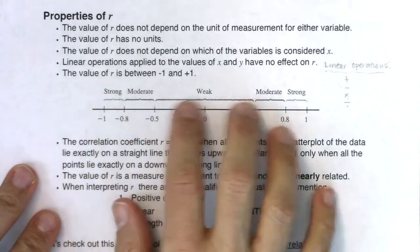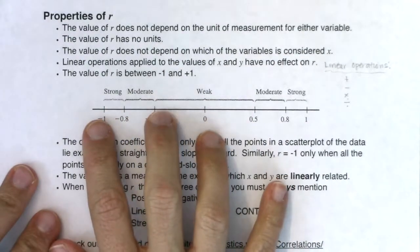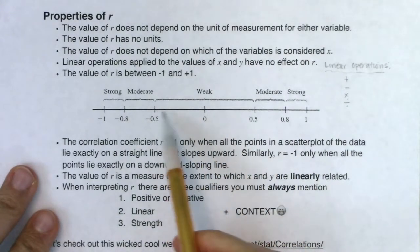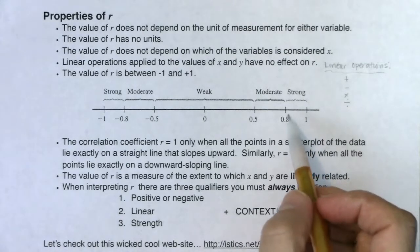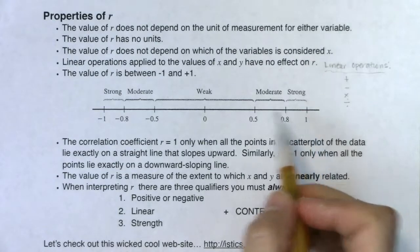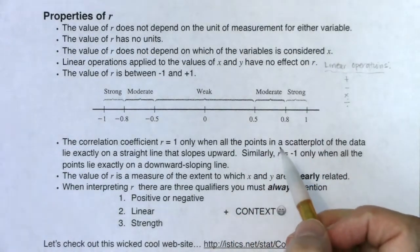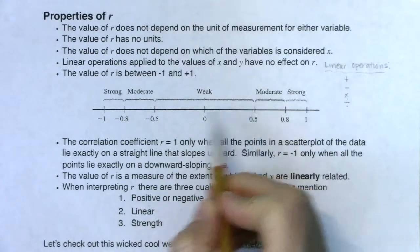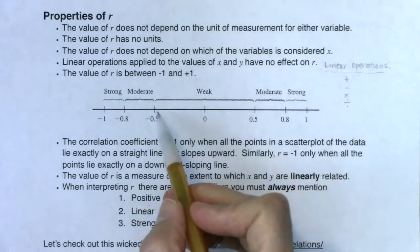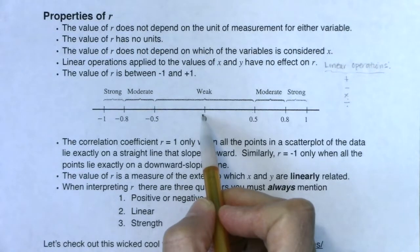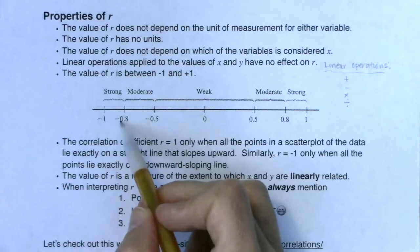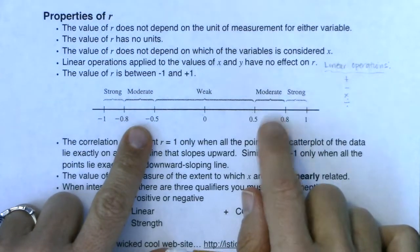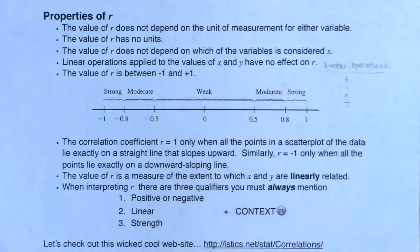Every R you're ever given will be a number between negative 1 and 1. On the positive side, any R value between 0.8 and 1 is considered strong; between 0.5 and 0.8 is moderate; and between 0 and 0.5 is considered weak. On the negative side, anything between negative 0.5 and 0 is weak; negative 0.8 to negative 0.5 is moderate; and negative 1 to negative 0.8 is strong. You can have strong, moderate, or weak in either direction — positive or negative — depending on the relationship of your data.